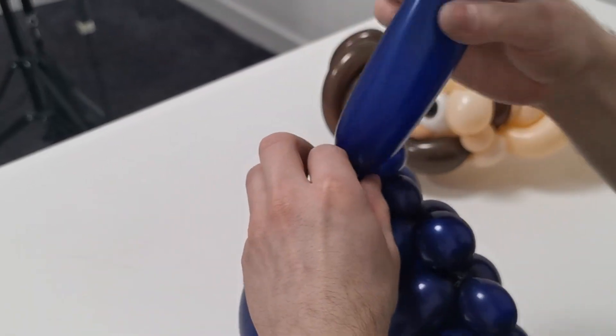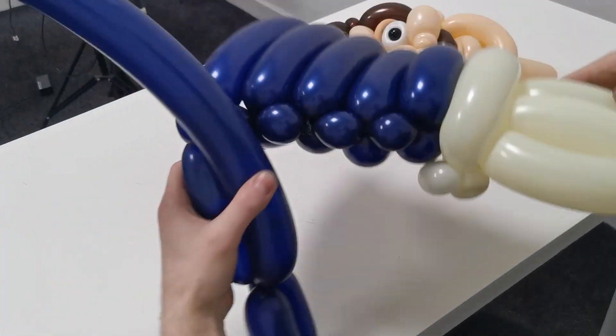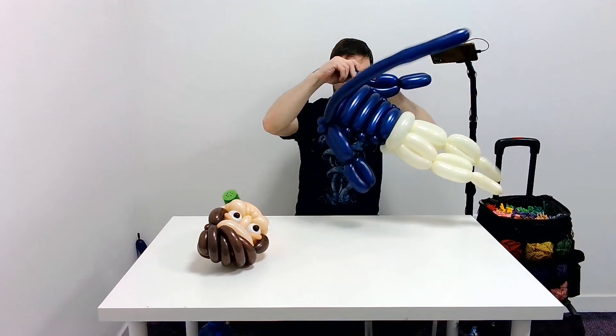Give him some arms. Ted needs some arms. Easy peasy. A couple of balloons down and back up again. Don't have to over complicate this.